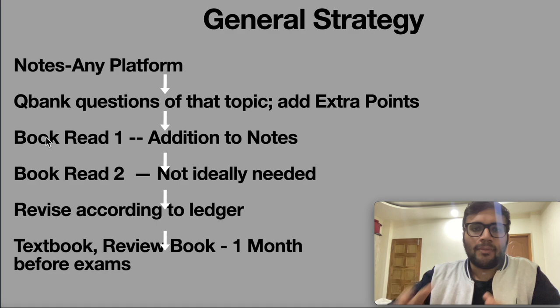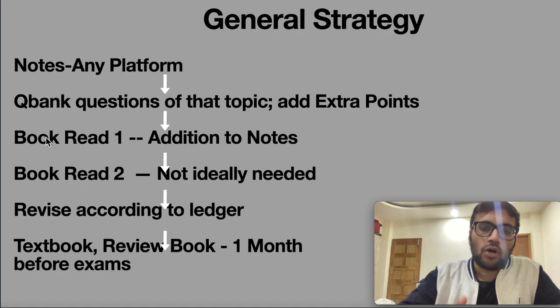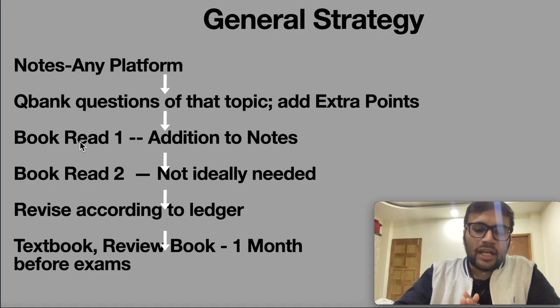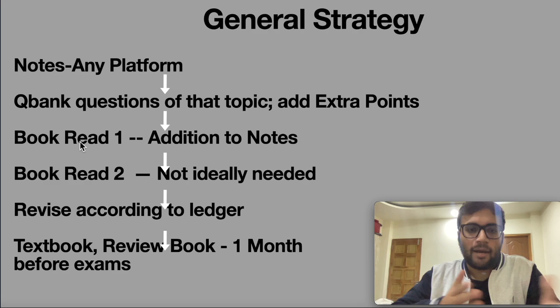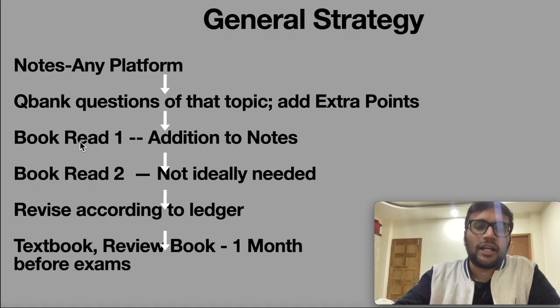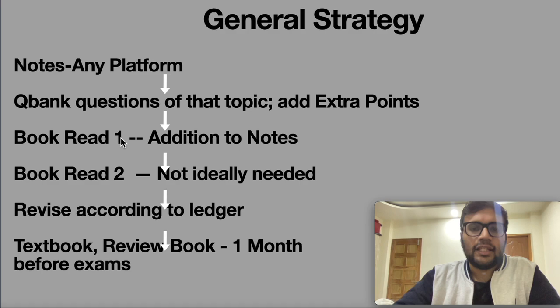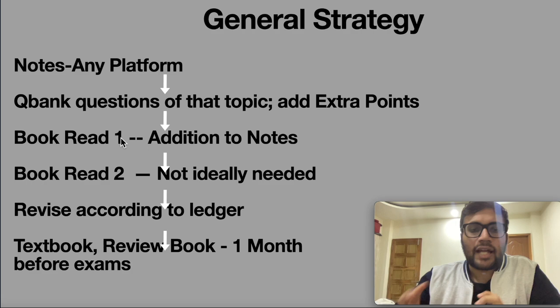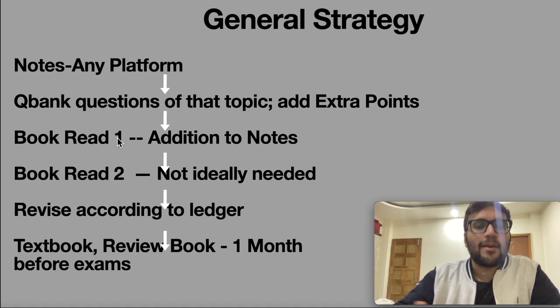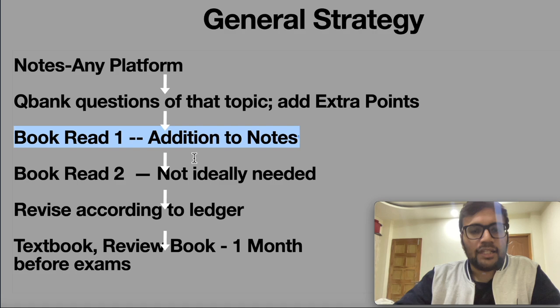Then go for book reading. Book reading may not be necessary at all — if you're a 2018 batch student with less time, spend that time on PSM, ophthalmology, and question practice instead. Still, if after all that some topic remains unclear, do book reading for those topics. For topics already covered, you only need to know the headings for writing exam answers — for example, tonsils: classification, types. Those details may not be in your notes, so for exam writing, add from book reading first time only.